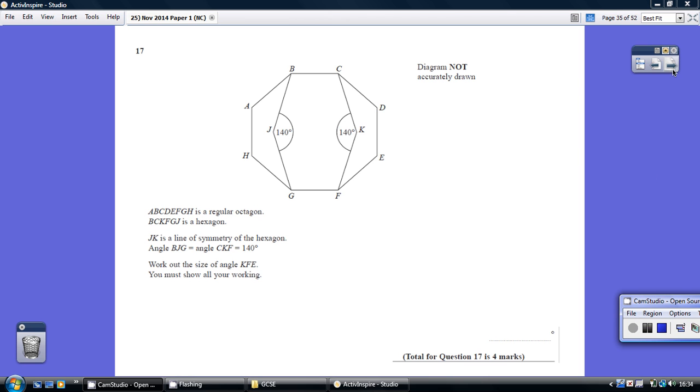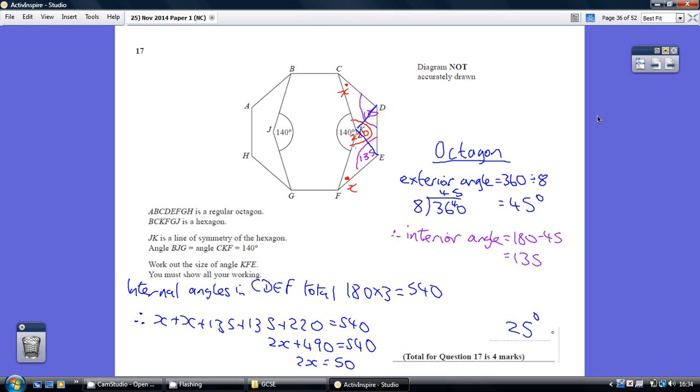Question 17. So let's start off with the octagon, that's the eight-sided shape going around the outside.